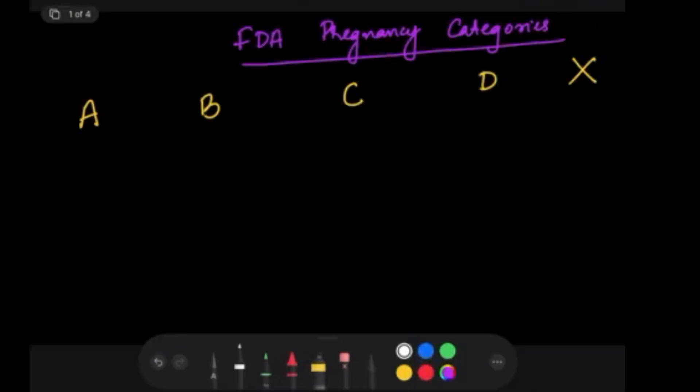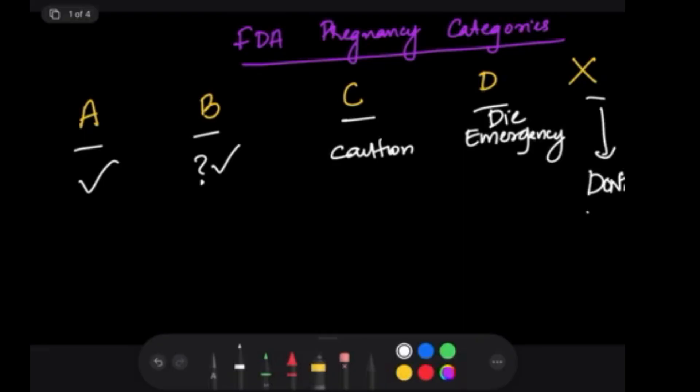Now FDA has pregnancy categories where they tell you exactly which drugs can be used and cannot be used. Category A is generally acceptable, Category B is may be acceptable, C is use with caution, D is for emergency, and X means don't use. Why is A acceptable? Because controlled studies have been done and pregnant women do not show any evidence of fetal risk. Category B may be acceptable because either it doesn't show any risk on animals, but in humans they have no data available.